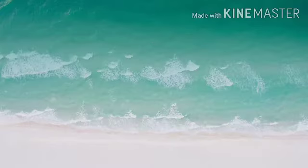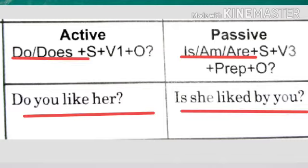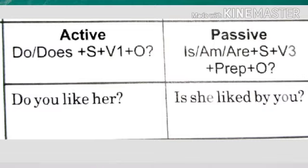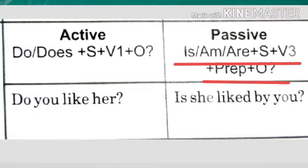Now let's come to interrogatives. In active voice, the interrogative present tense starts with 'do/does.' The active rule is: do/does + subject + first form of verb + object. When you change it to passive, 'do/does' changes to 'is/am/are.' If the subject is singular, use 'is'; if plural, use 'are.' So 'Do you like her?' changes to 'Is she liked by you?' The passive rule is: is/am/are + subject + third form of verb + preposition + object.